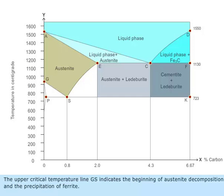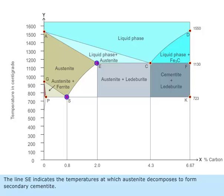The upper critical temperature line GS indicates the beginning of austenite decomposition and the precipitation of ferrite. The line SE indicates the temperatures at which austenite decomposes to form secondary cementite.